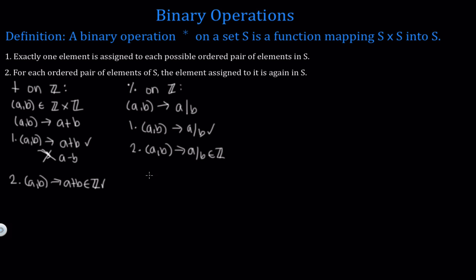But if we look at this, for example, (2, 3) gets mapped to two-thirds. And two-thirds is no longer a whole number, so it is not an element in the set of integers. In fact, any ordered pair where b is not equal to one will not satisfy this condition. So this tells us that division is not a binary operation on the set of integers.